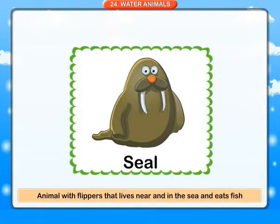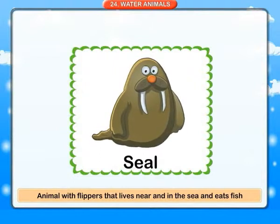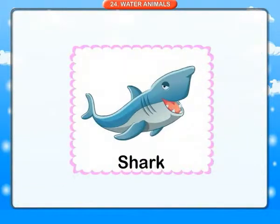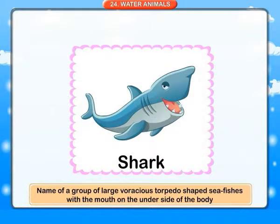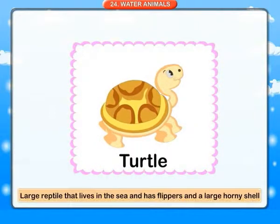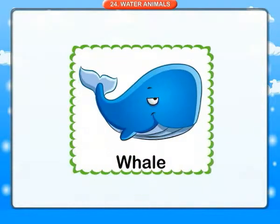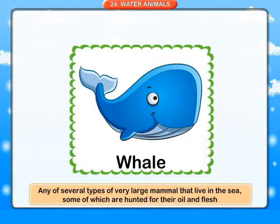Seal: an animal with flippers that lives near and in the sea and eats fish. Shark: a name for a group of large, voracious, torpedo-shaped sea fishes with the mouth on the underside of the body. Turtle: a large reptile that lives in the sea and has flippers and a large horny shell. Whale: any of several types of very large mammal that lives in the sea, some of which are hunted for their oil and flesh.